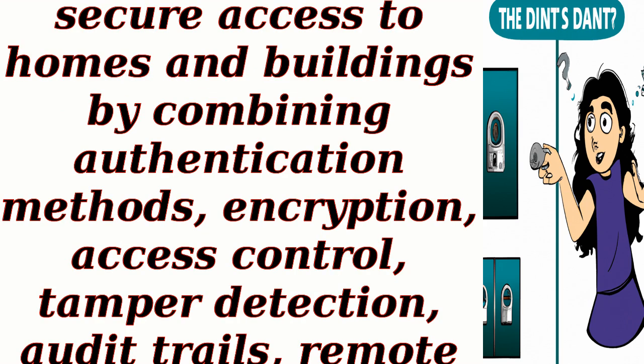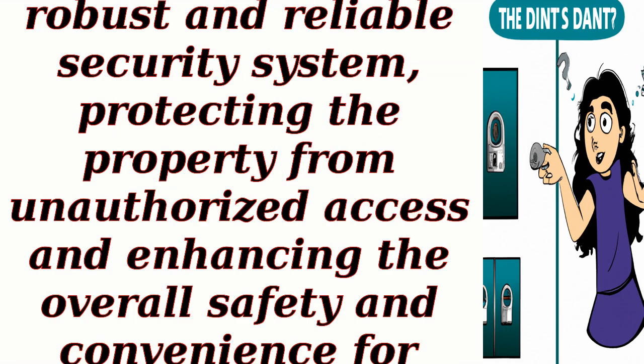Overall, a digital door lock provides secure access to homes and buildings by combining authentication methods, encryption, access control, tamper detection, audit trails, remote access, and power backup. These features work together to create a robust and reliable security system, protecting the property from unauthorized access and enhancing the overall safety and convenience for residents or occupants.